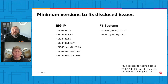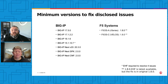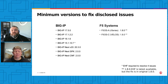The minimum versions to fix these disclosed issues are: for BigIP, 17.5.0 or 17.1.2.2 in the 17 branches, 16.1.6 in the 16 branch, and 15.1.10.7 in the 15.1 branch — with an asterisk because an EHF will be required to resolve four of the issues in 15.1.10. For BigIP Next version 20, the minimum version is 20.3.0, and for SPK and CNF, it's 2.0.0. For F5OS, the minimum version will be 1.8.0.